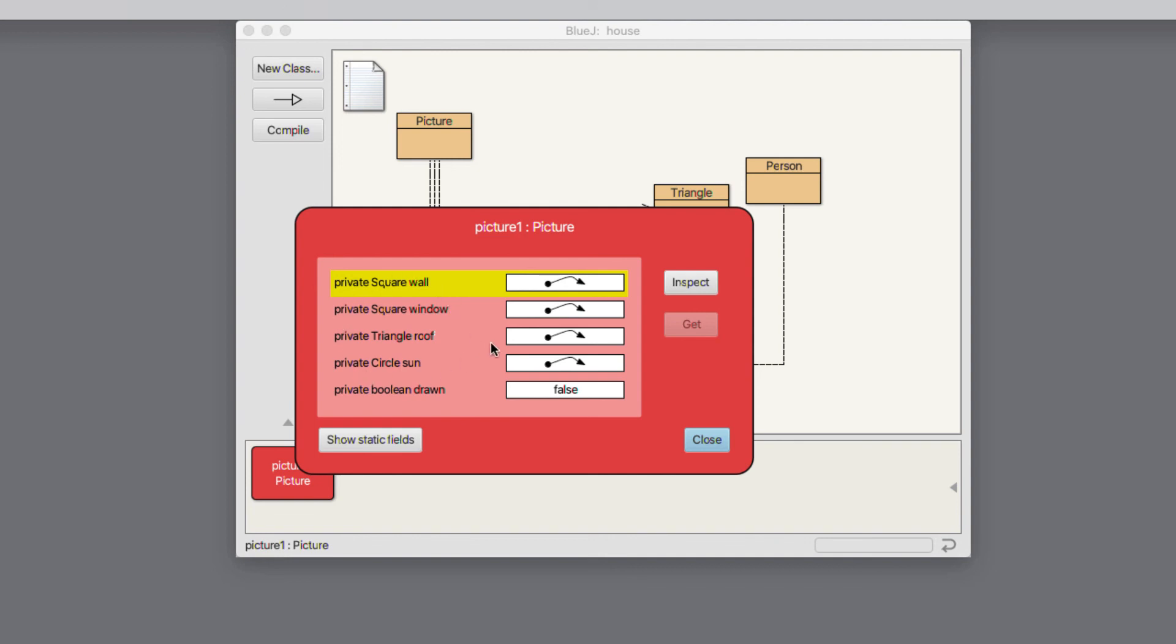So what this means is that when we create a picture object, a number of squares, triangles and circles get created as part of the picture object. In other words, a picture object is a composite of instances of other classes.